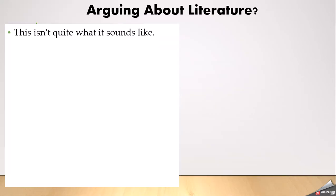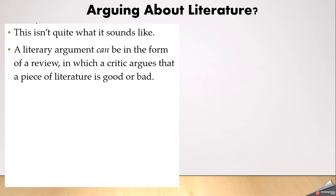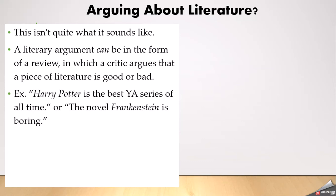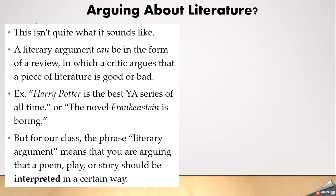The first question people have is that they don't really understand how to argue about literature. It's not quite what it sounds like. A literary argument can be a review — a critic who argues that a piece of literature is good, worthy of reading, or bad. If you go on Goodreads or Amazon, you can see book reviews that do this. When you're arguing about literature for our class, it means that you're making a case that a poem, a story, or a play should be interpreted in a certain way.